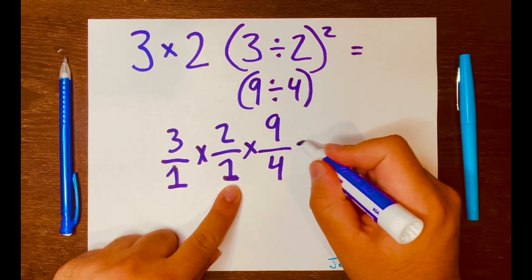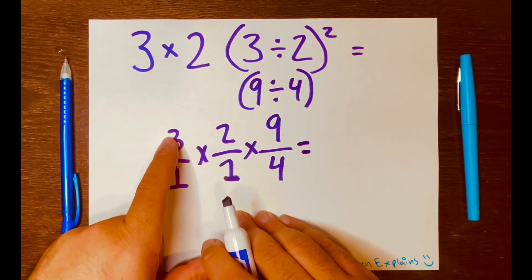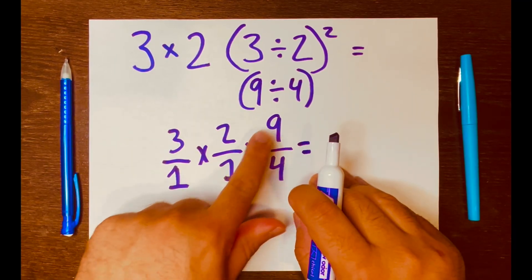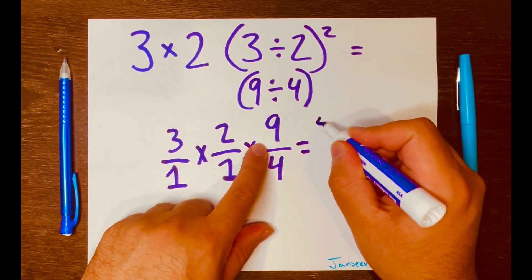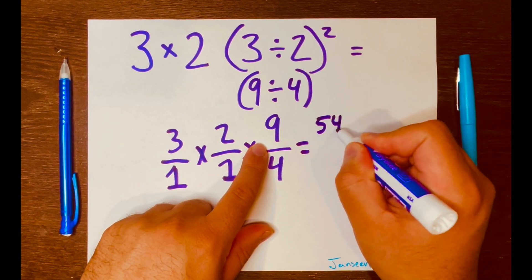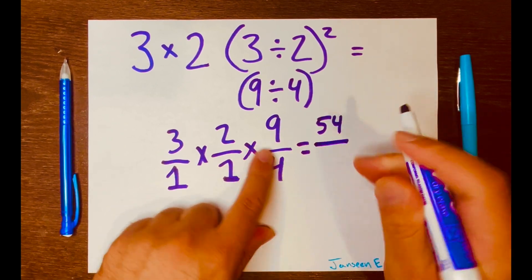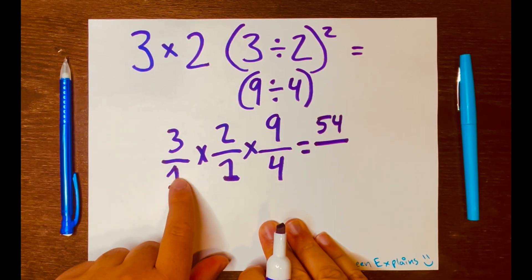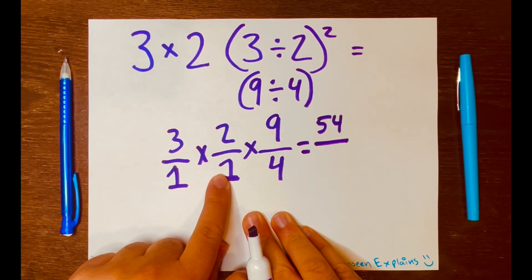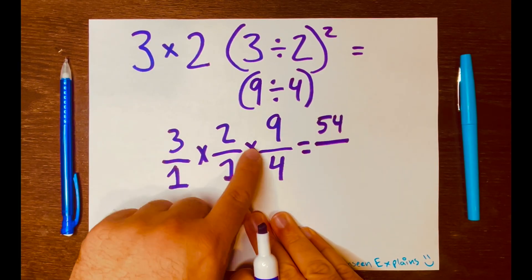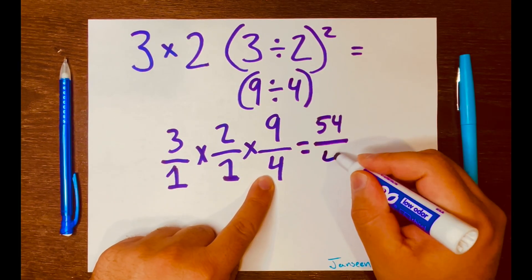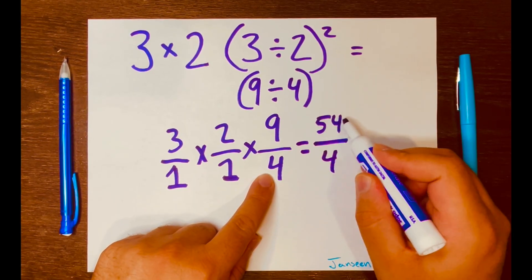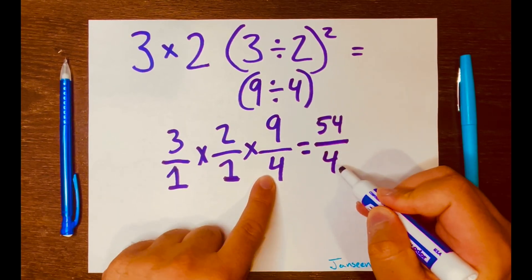Now all we have to do is multiply across. Three times two is six, times nine is 54. And one times one times four is four. So now we have 54 over four.